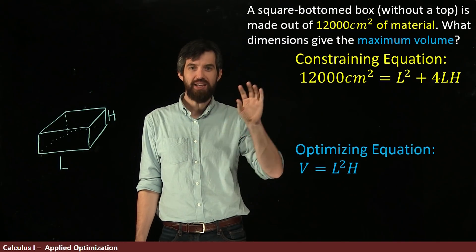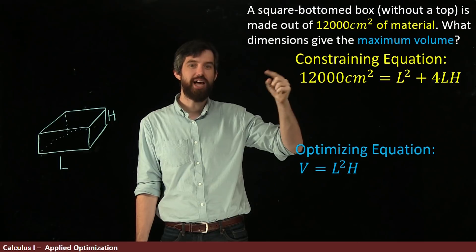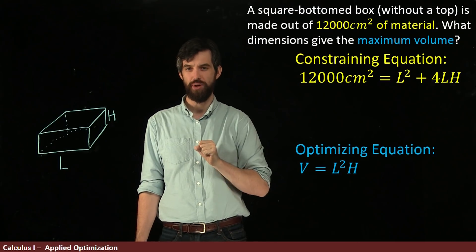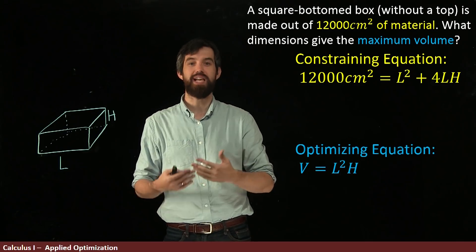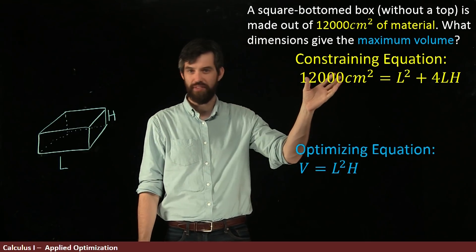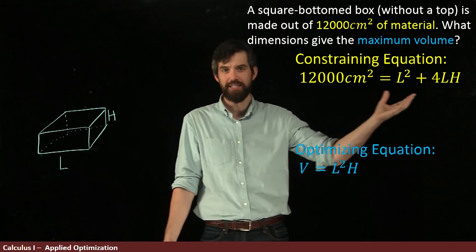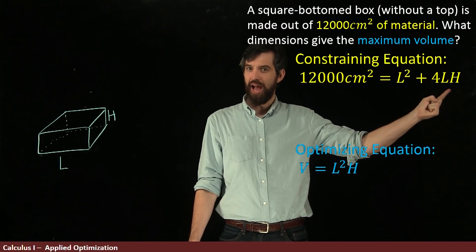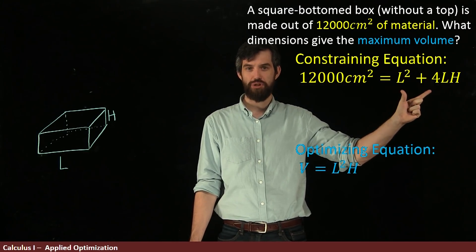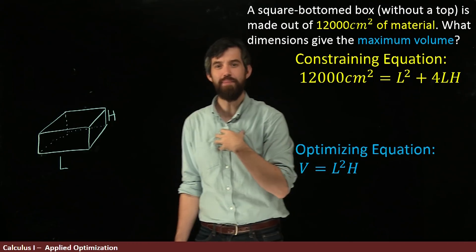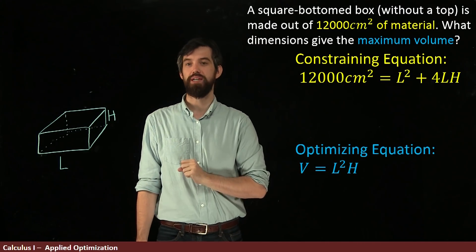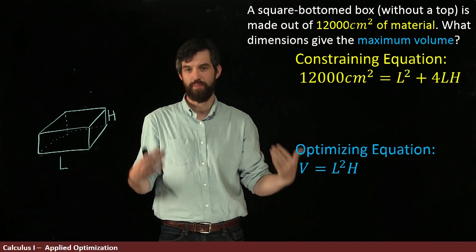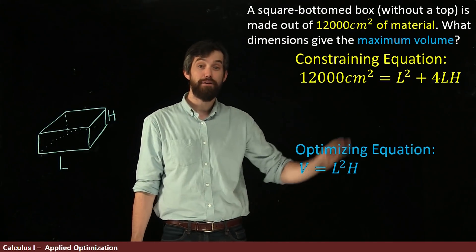My trick is this. I'm going to take the constraining equation, and I'm going to try to feed it into my optimizing equation. I'm trying to get rid of one of the variables. I'm going to try to get rid of, in particular, if I look at this, I can get rid of L or H. But H is by its side. It's only there once, and the L occurs at two different places. So to me, it makes sense. Let's make H equal to blah, and we'll take the H and put it into there. Then I will only have Ls remaining.